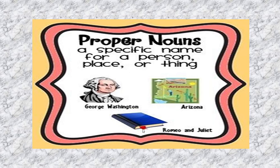Let us say another example. When I tell you I have a book, but when I tell you I have a book named Romeo and Juliet — that means I am giving you a particular book. The name is Romeo and Juliet. So this Romeo and Juliet, which is a particular name, is my proper noun.